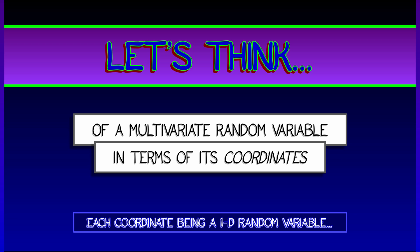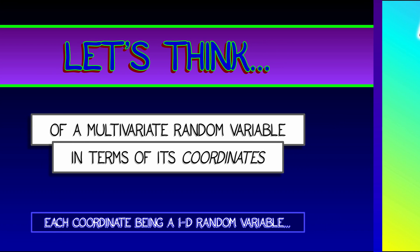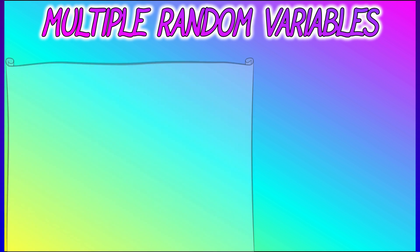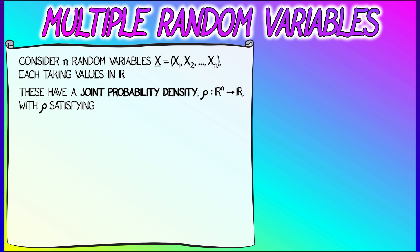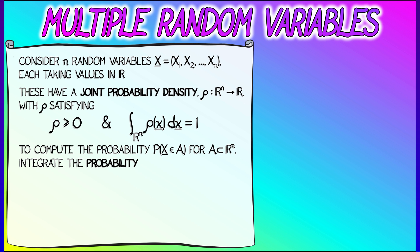Each of these will wind up being a random variable in its own right. Let's say that we have a joint probability density rho. We're going to think of this random vector x as having n components, x1 up through xn, each being a random variable on R.